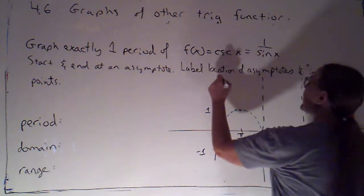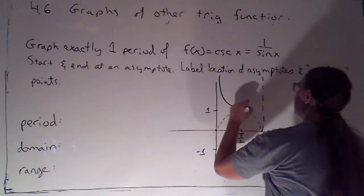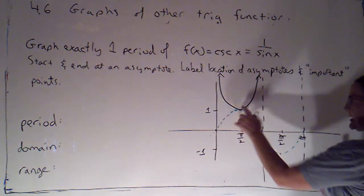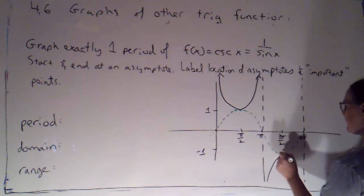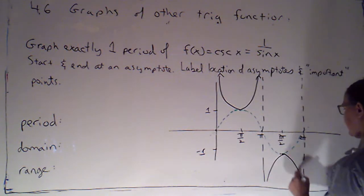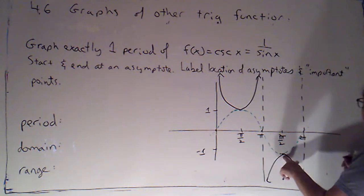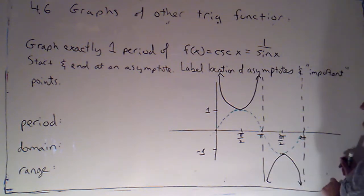So when I graph cosecant, the low point of cosecant coincides with the high point of sine and the high point of cosecant coincides with the low point of sine.